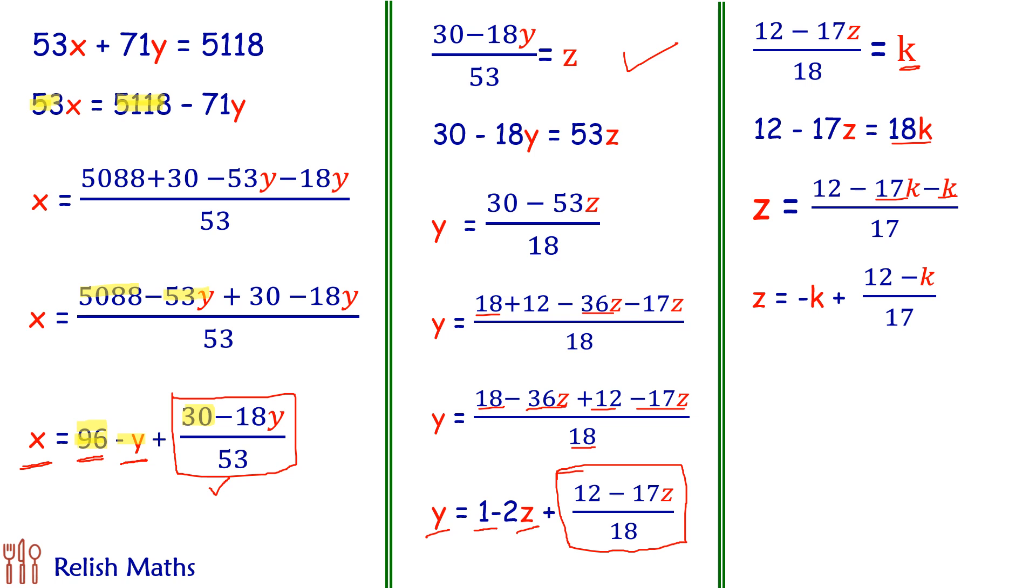Now, here if we will see this is integer, this is integer, and this expression has to be integer. And for this expression to be integer, what shall be the value of k? Now, think on it. What shall be the value of k for this expression to be integer?